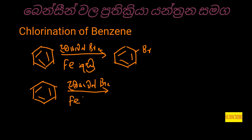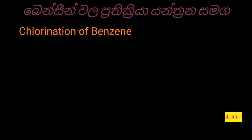FeBr3 catalyst. The reaction produces chlorobenzene. Benzene reaction with FeCl3 — chlorobenzene reaction. When we get to the chlorine, it will be separated with the chlorine.